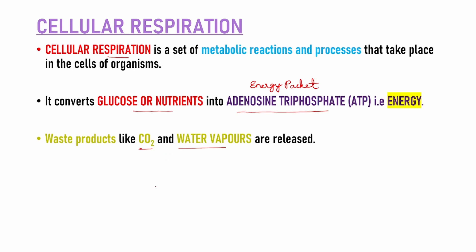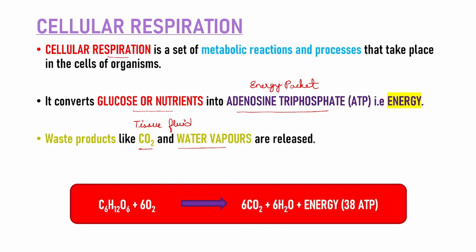Toh carbon dioxide ko body ke bahar kaise nikala jaata hai — hum ne external aur internal respiration mein dekha tha. Tissue fluid isse blood tak pahunchata hai, toh wahaan se it will pass out to the lungs and then lungs se it will be exhaled out of the body through the nose. In a chemical equation: glucose (C6H12O6) in the presence of oxygen (O2) produces carbon dioxide and water vapor, and energy (ATP molecules) is produced.